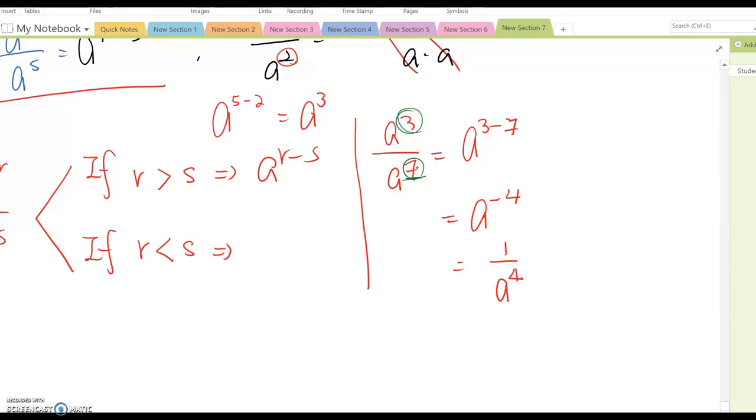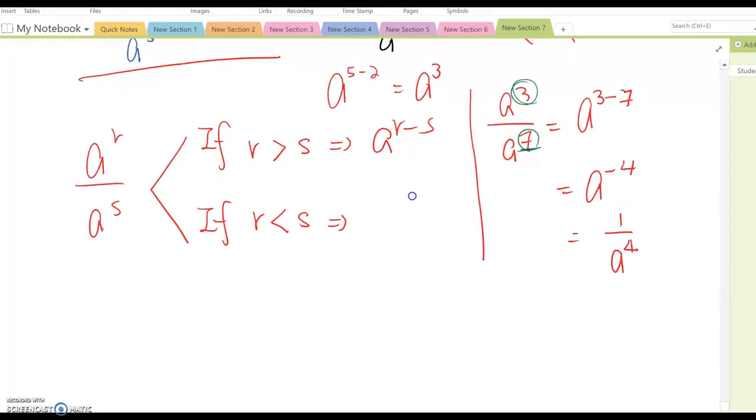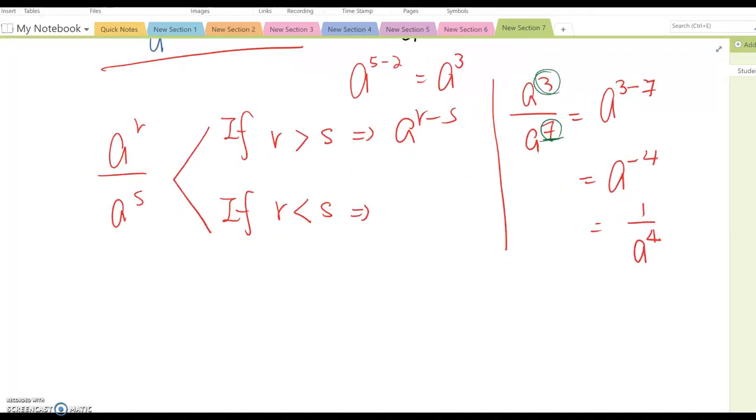Looks like you may subtract this power from this power, basically. And then, moving everything to the denominator part. So, now we can say, if degree R is smaller than degree S, I am going to make that 1 over A to the S minus R. Okay?